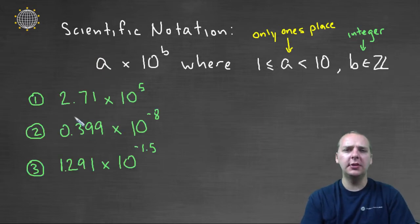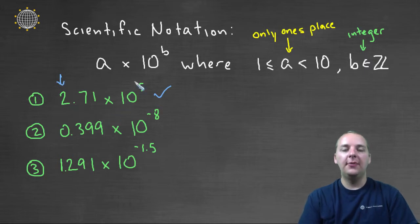So let's quiz ourselves here real quick and see if we can tell which of these numbers are in scientific notation. The first one is 2.71 times 10 to the fifth. That looks great to me. The a has a ones place only, it's 2.71, it's not 12.71 or 112.71, it just has a leading 2, and 5 is an integer.